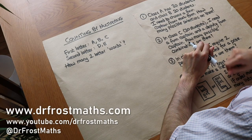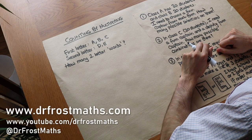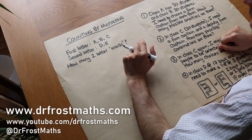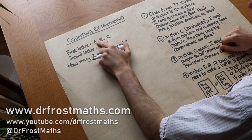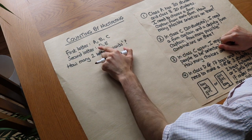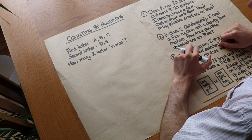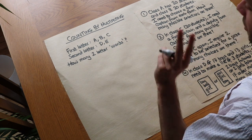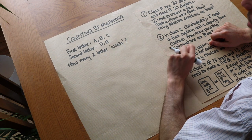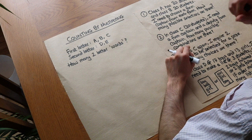Hello and welcome to this video on counting by multiplying. Let's say that we want to form a two-letter word, and the first letter is allowed to be A, B, or C, and the second letter is allowed to be D or E. How many words can we form? I'll put that in quotes because it doesn't necessarily have to be a word in a dictionary.